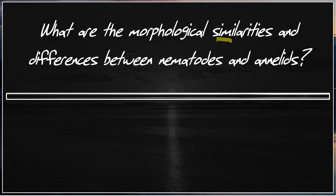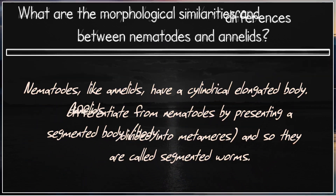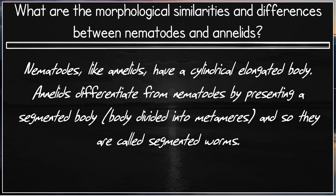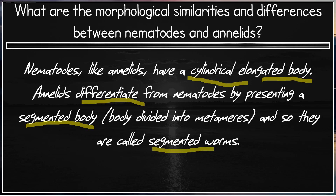What are the morphological similarities and differences between Nematodes and Annelids? Nematodes, like Annelids, have a cylindrical elongated body. Annelids differentiate from Nematodes by presenting a segmented body — the body divided into metameres — and so they are called segmented worms.